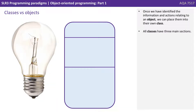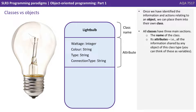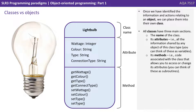Once we've identified the information and actions relating to an object, we can place them into their own class. All classes have three main sections. We have the name of the class at the top. We have the class's attributes, i.e. all the information shared by any object of this class type — you can think of these like variables. And we have its methods, i.e. the code associated with the class that allows you to access or change its attributes, and you can think of these broadly as subroutines.